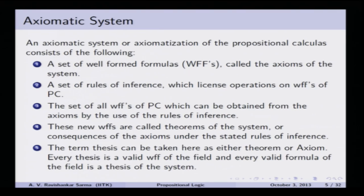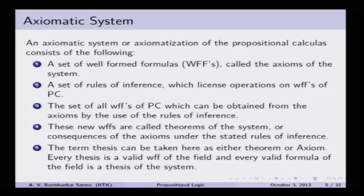In addition to axioms, there are some set of rules of inference which license operations on well-formed formulas of propositional calculus. There are rules of inference such as modus ponens, and transformation rules such as uniform substitution, which generate theorems from axioms. These rules should be as minimal as possible. Third, you need a set of well-formed formulas obtainable from the axioms by means of rules of inference — typically only one rule of inference is used, which is the modus ponens rule: when you have A implies B and A, A gets detached and B follows.